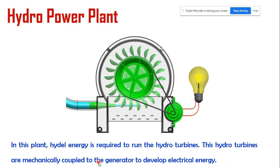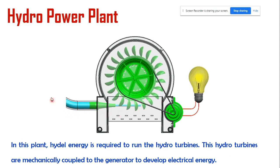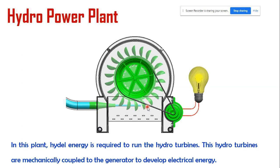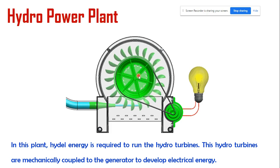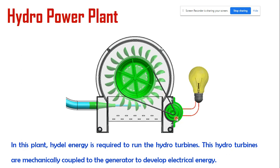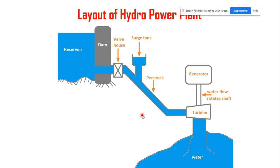The hydro turbines are mechanically coupled to the generator to develop electrical energy. In this animation, the green rotating part is the turbine. The outer periphery of the turbine is arranged with buckets, and water is passed forcefully onto these buckets. Due to this water force, the buckets move and the entire turbine rotates. The turbine develops mechanical energy from hydro energy, which is then transferred to the generator through mechanical coupling. The generator generates electrical energy using this mechanical energy as input.